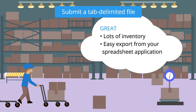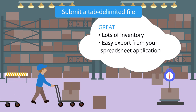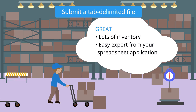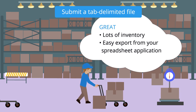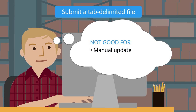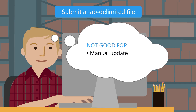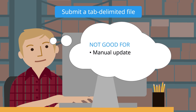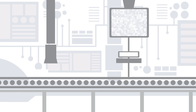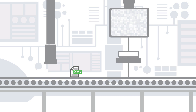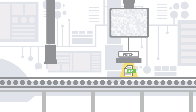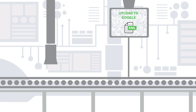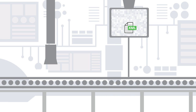A tab-delimited file is also a handy spreadsheet format to use. You can include lots of products, and you can easily upload it to the Merchant Center. The only drawback is that you have to manually update your product information in your spreadsheet and re-export the file. Some systems can also create a tab-delimited or XML file automatically, and then you can tell Merchant Center to regularly fetch that file from your server or upload it to one of Google's servers.